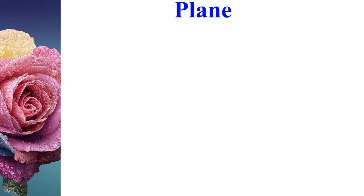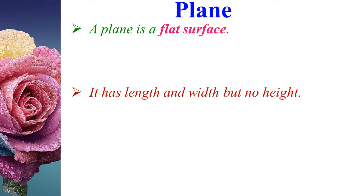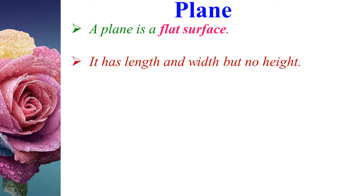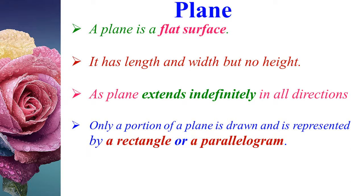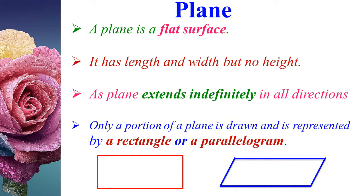Let us see what is a plane. A plane is a flat surface. It has length and width but no height. A plane extends indefinitely in all directions. Only a portion of a plane is drawn and is represented by a rectangle or a parallelogram.